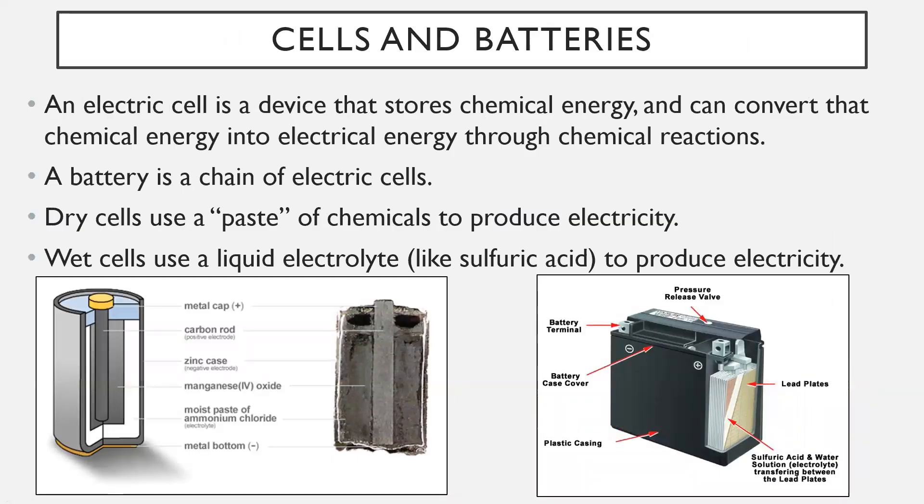You'll also need to know a little bit about cells and batteries. An electric cell is a device that stores chemical energy and then converts that chemical energy into electrical energy through chemical reactions. Some sort of chemical reaction occurs within a battery and that releases electrons which causes current electricity to flow. Now a battery is just a chain of electric cells. We often use the word cell and battery interchangeably, but really they are different things. A true battery is a bunch of cells put together. Dry cells use a paste of chemicals to produce electricity. Inside a dry cell, kind of like a AA or AAA battery, there is a paste. It's not totally wet or dry. It's like a pasty sludge. In that sludge there's chemicals that do a chemical reaction and emit electrons. Now wet cells, which are found in car batteries, they actually use a liquid electrolyte. Usually it's sulfuric acid to produce electricity.